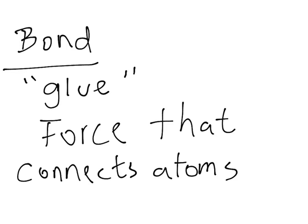That is the definition of a chemical bond. However, there are two classes of bonds: covalent bonds and ionic bonds. I am going to describe each separately.